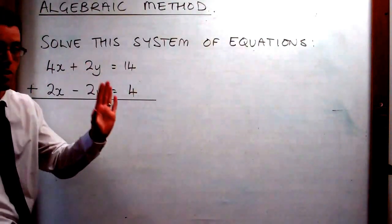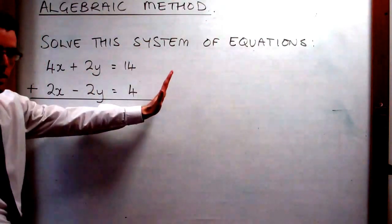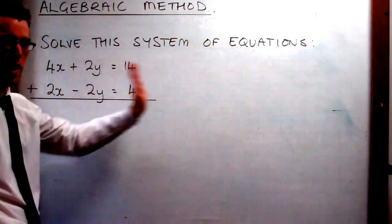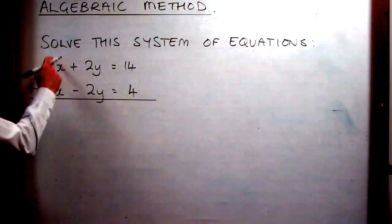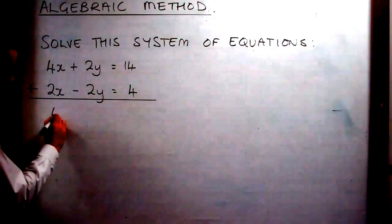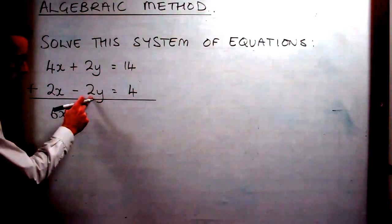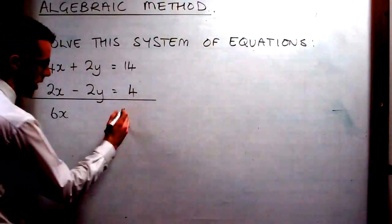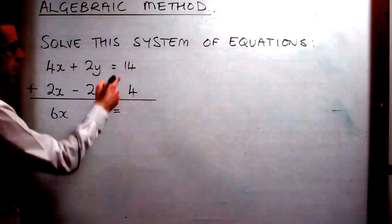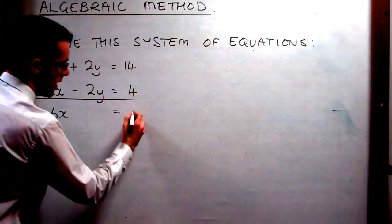Now different to upstairs downstairs sums, you don't go from right to left. You go from left to right for these. So we go 4x and 2x is 6x. We go 2y add negative 2y is zero. So we're just going to leave that blank just now.